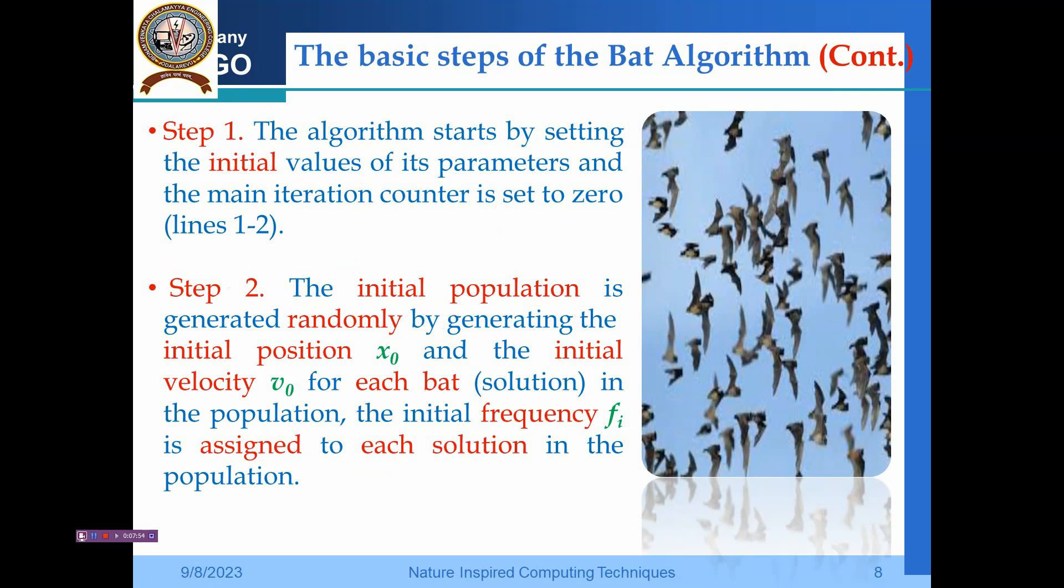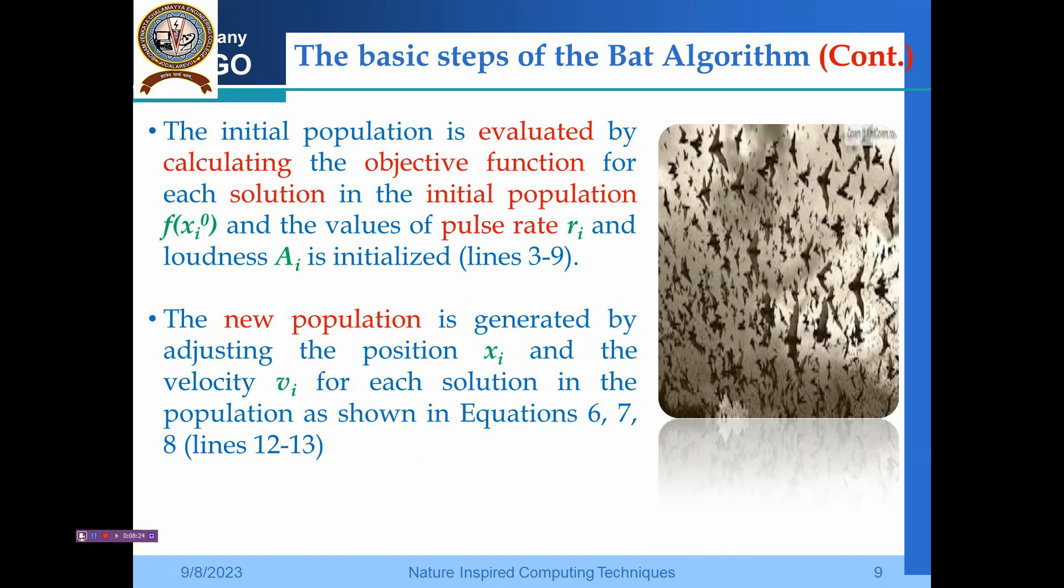Now coming to the detail of explanation: you have seen lines 1 and 2 of the algorithm where we set the initial values of the parameters. In step 2, the initial population is generated randomly by generating the initial population x_0 and the initial velocity v_0 for each bat in the population. The initial frequency f_i is assigned to each solution. The initial population is evaluated by calculating the objective function f(x_i), and the values of pulse rate r_i and loudness A_i are initialized, as represented in algorithm lines 3 to 9.